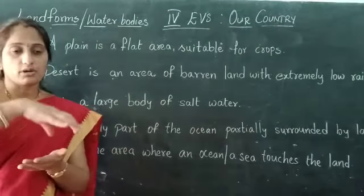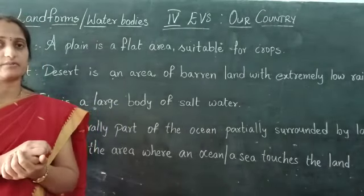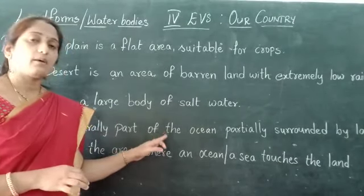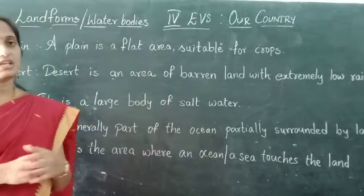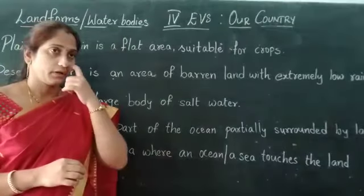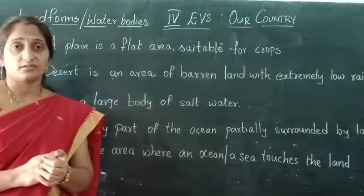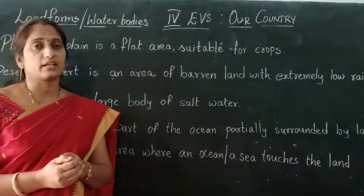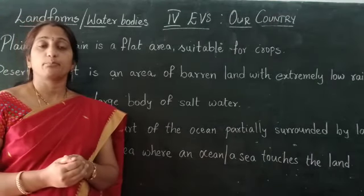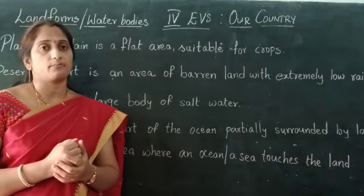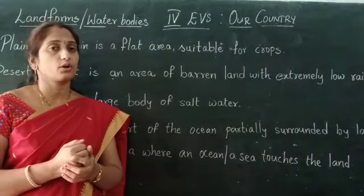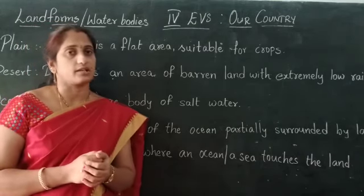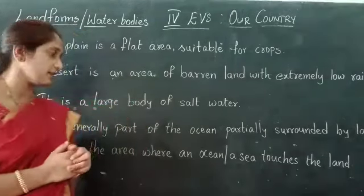A sea is surrounded by land around it. For example, we have RK Beach, and near Vijayawada in Machilipatnam we have Mandar Beach — that is a sea. That is an example of a sea.